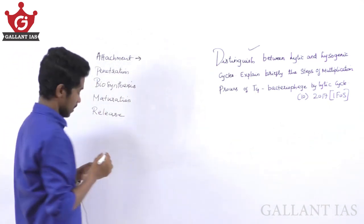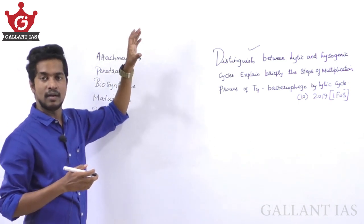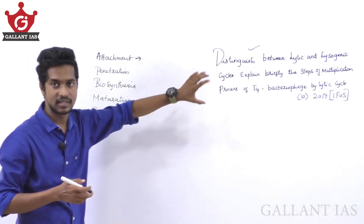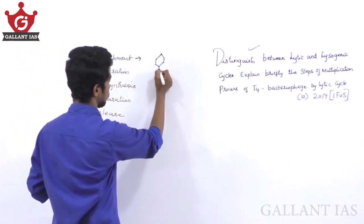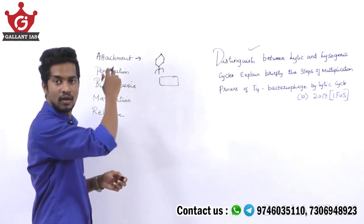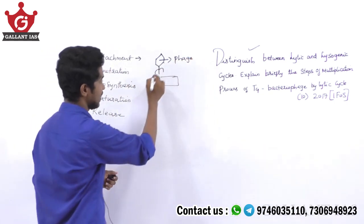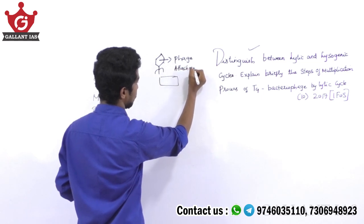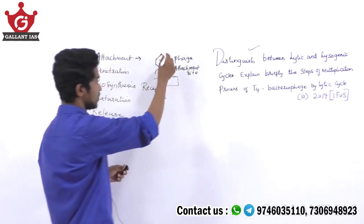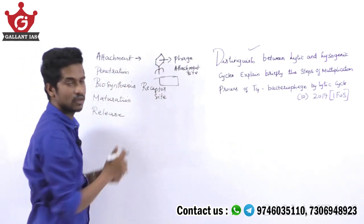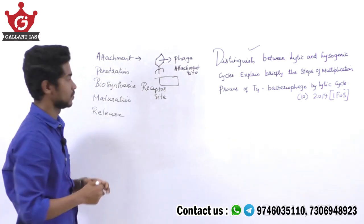The first step is attachment. In this step, the virus gets attached to the host cell — here the host cell is a bacterium. The bacteriophage has an attachment site, and the host cell has a receptor site. The attachment site of the phage comes in contact with the receptor site of the host cell, and thereby the attachment of the phage with the host cell is carried out.